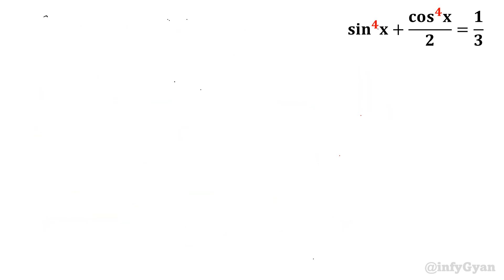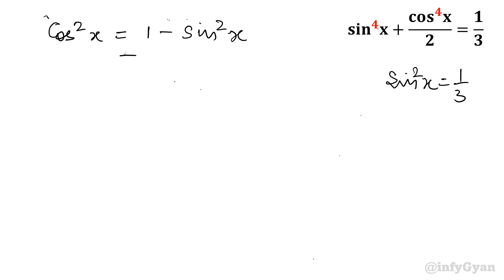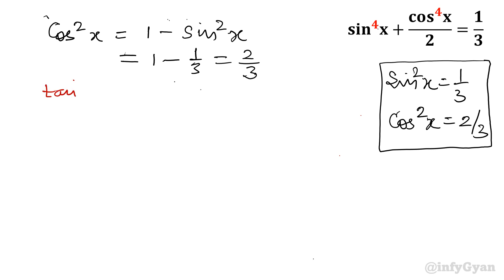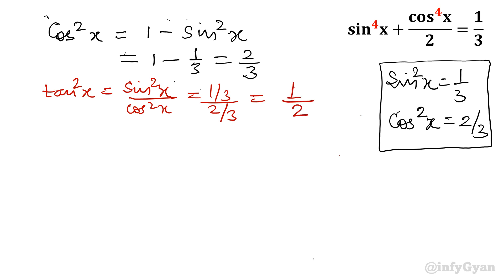So sin²x = 1 over 3. Now cos²x equals 1 minus sin²x, which is 1 minus 1 over 3, giving cos²x = 2 over 3. Now looking at the options, we need tan²x. tan²x = sin²x over cos²x = (1/3) over (2/3) = 1 over 2. And 1 over 2 is option A. So option A is the correct option.